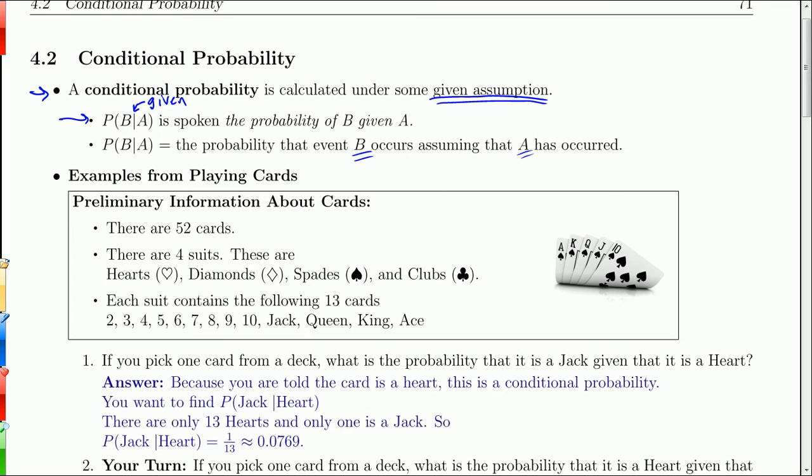We'll do the first set of examples with respect to playing cards. There are 52 cards. There are four suits: hearts, diamonds, spades, and clubs. Each suit contains 13 cards: 2 through 10, Jack, Queen, King, and Ace. That gets us started for our conditional probabilities when we're calculating the probability of B given A.